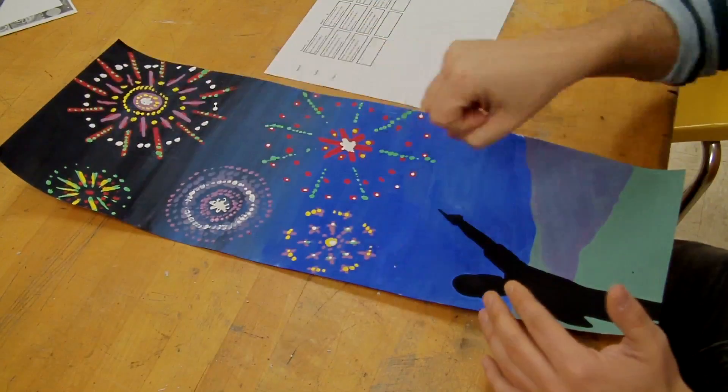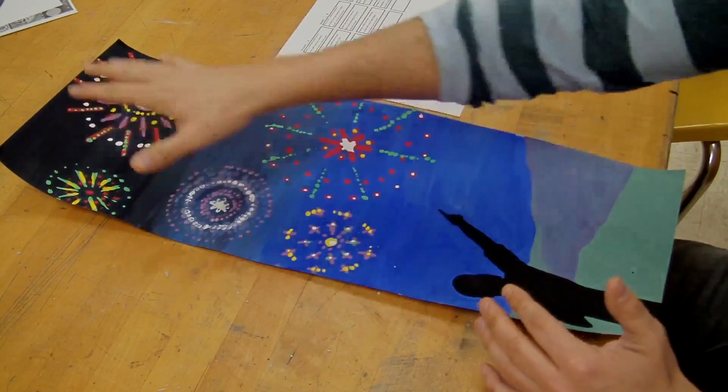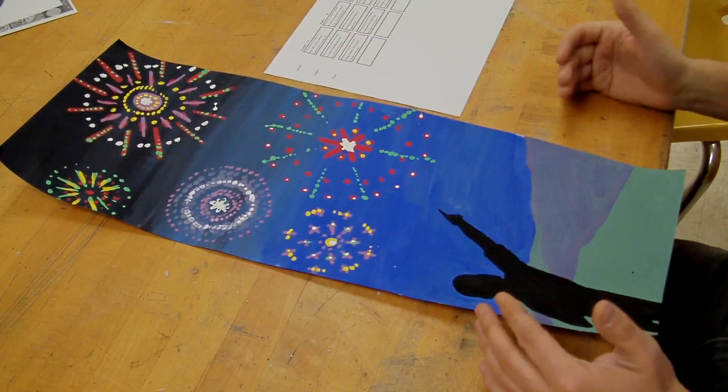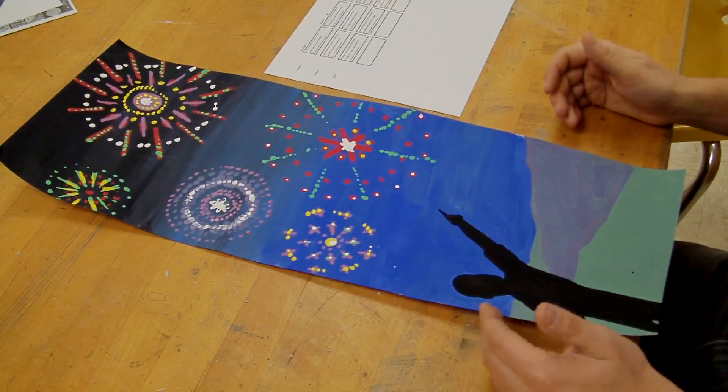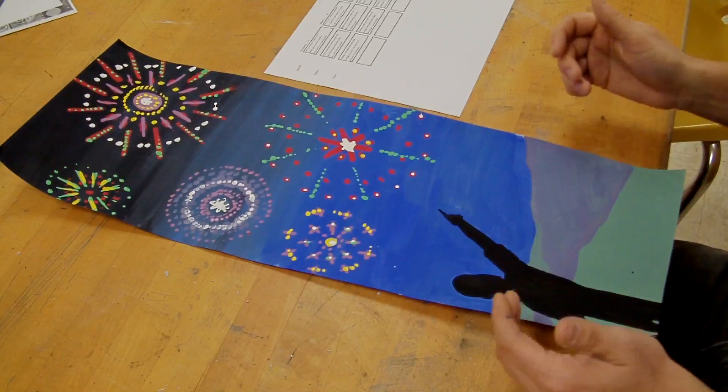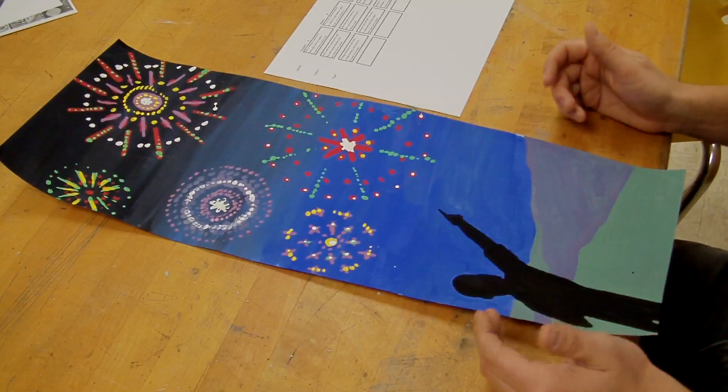So once you've laid it out, you've got foreground, middle ground, background, things are interesting up here. Now you're going to be going to the colors. In here it says the colors used have a good contrast and are used to draw attention to the sky rather than the ground.